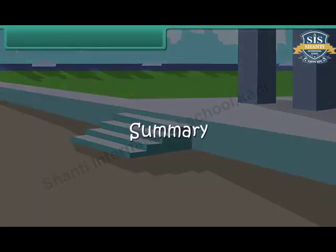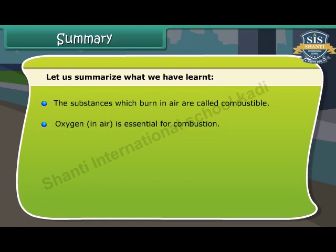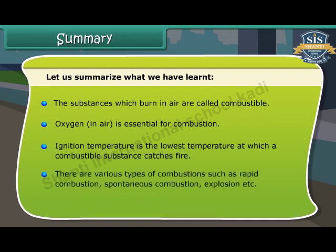Summary: The substances which burn in air are called combustible. Oxygen in air is essential for combustion. Ignition temperature is the lowest temperature at which a combustible substance catches fire. There are various types of combustion such as rapid combustion, spontaneous combustion, explosion, etc.